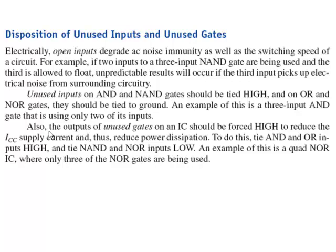The other thing is unused gates on an IC should be forced into a high condition to reduce the ICC. Remember the ICCH was a little bit less than ICCL? So you want the gate that's unused to be forced into a high condition to reduce that supply current which reduces the power dissipation. So to do this if you have AND or OR inputs you want to take those and make them high. Because if you have an AND gate you tie both inputs high, you would get a high out. If you had an OR gate both inputs high, you would get a high out. So that takes those gates and reduces their power dissipation. Also if you have NANDs and NORs or inverters you want to tie those low to make their outputs high. An example is if you had a quad NOR if you're only using three of the NOR gates, take care of that fourth one. Make sure it's forced high and its output is forced high.